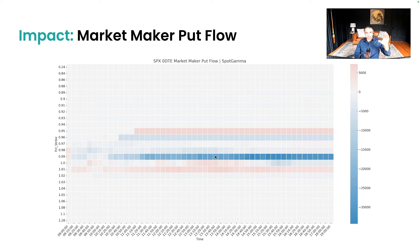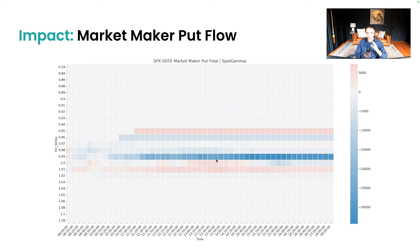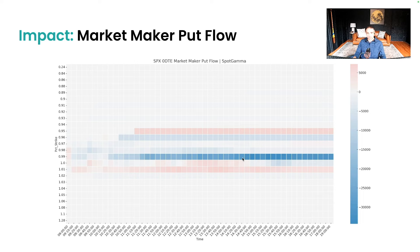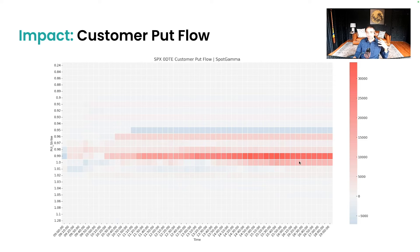We normalized the market-maker put flow by puts bought and sold, normalized by how far out of the money the position is over the course of a day. What you distinctly see is something like a condor or fly where the body's short but the wings are long. That basically means if there is a big jump in the market up or down, the dealers or market makers seem to be hedged with these positions.